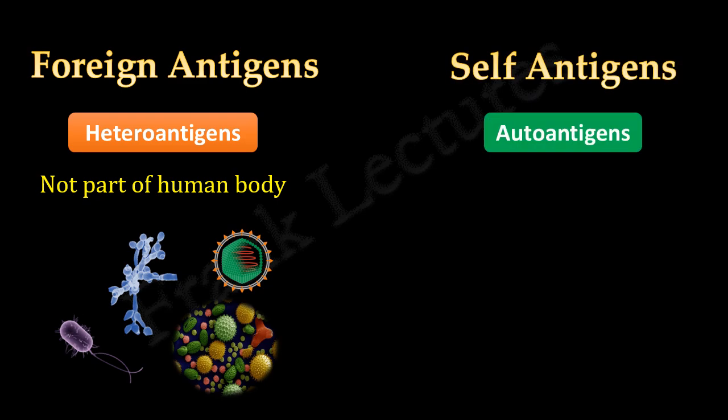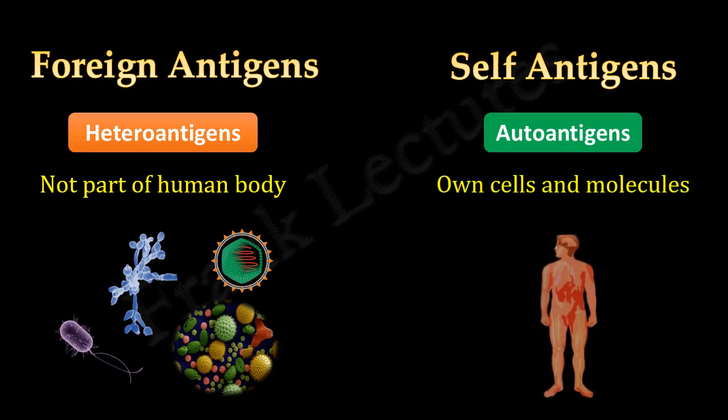But self-antigens are components of our own body — for example, our own cells and cell surface molecules. The main function of our immune system is to provide protection against the invasion of foreign antigens.